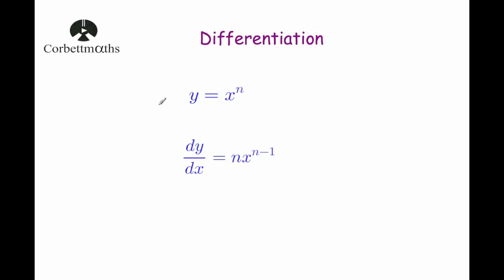In this video we're going to use the general rule. So if you're given y equals x to the power of n, when you differentiate it, or when you find dy by dx, the answer would be n times x to the power of n minus 1. In other words, you bring the power down and you reduce the power by 1. And that's how you differentiate.